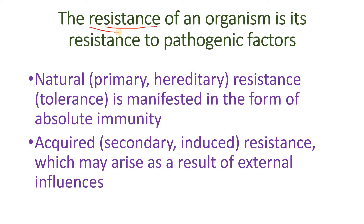The body's resistance to pathogenic effects is expressed in various forms. Natural primary hereditary resistance is manifested in the form of absolute immunity — for example, a person's immunity to cattle plague, immunity to one's own tissue antigens, and animals' immunity to human sexually transmitted diseases.